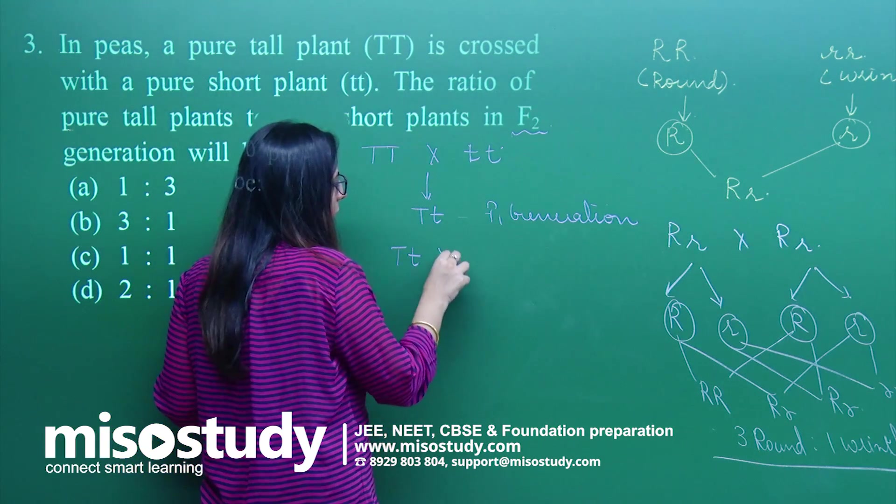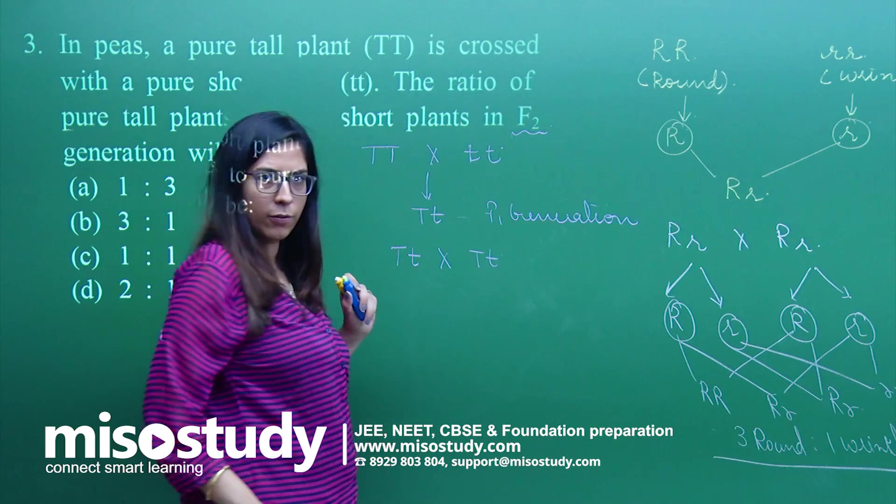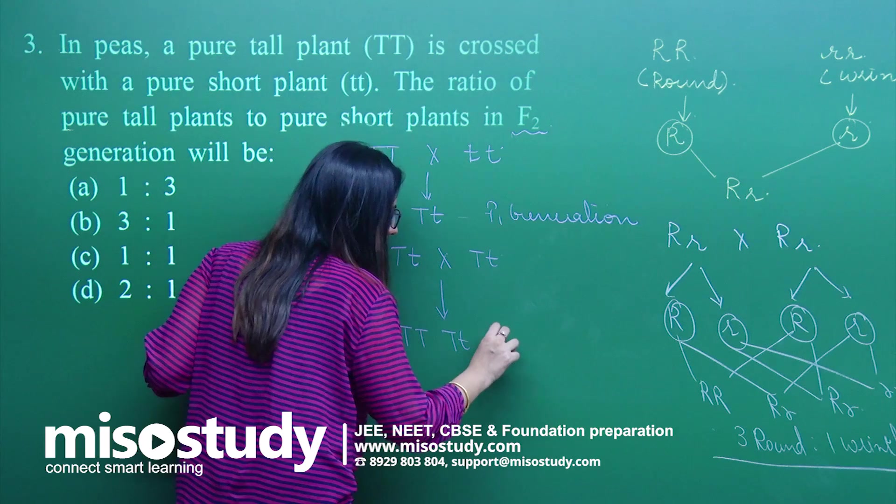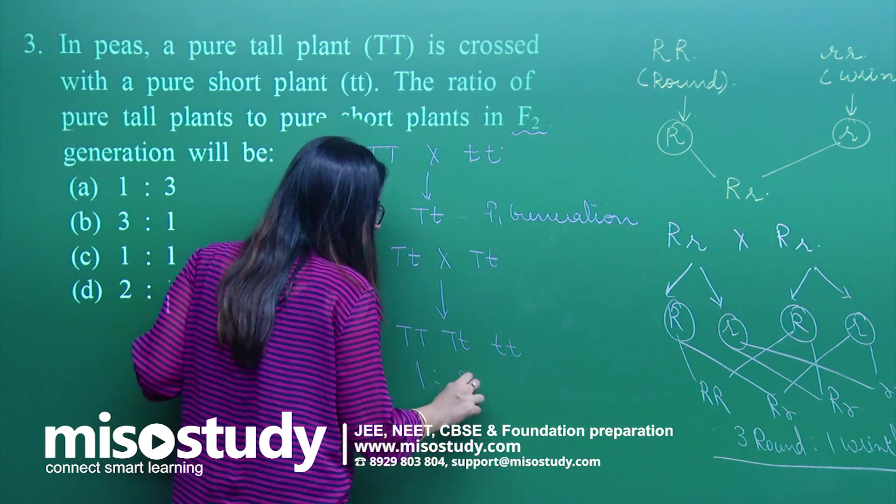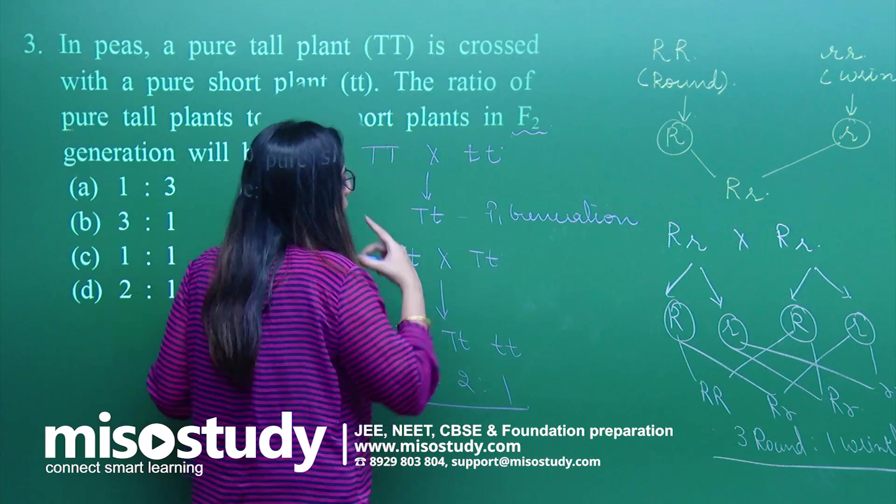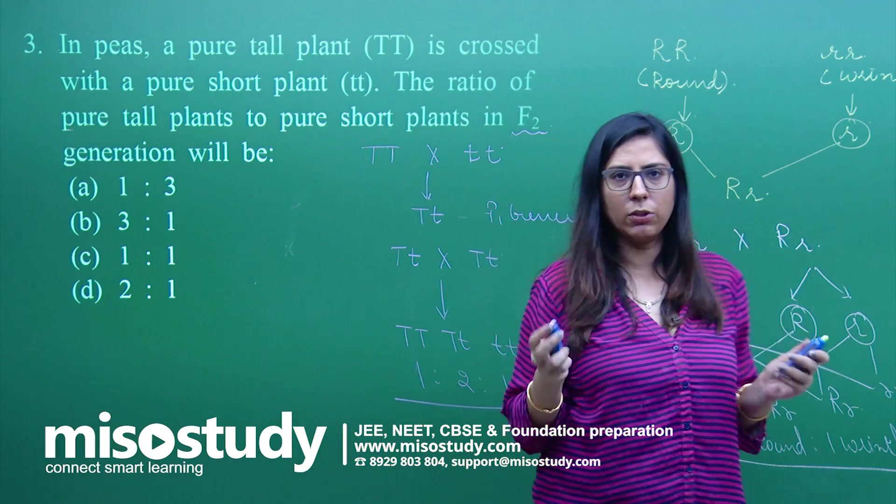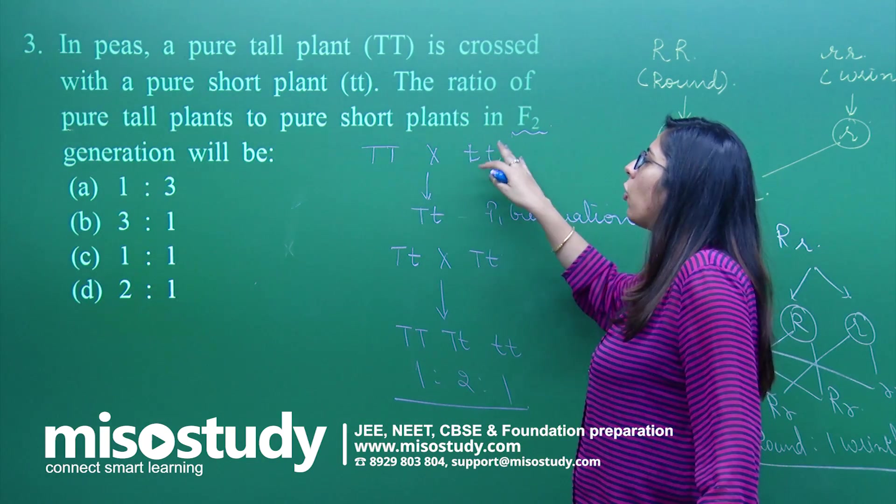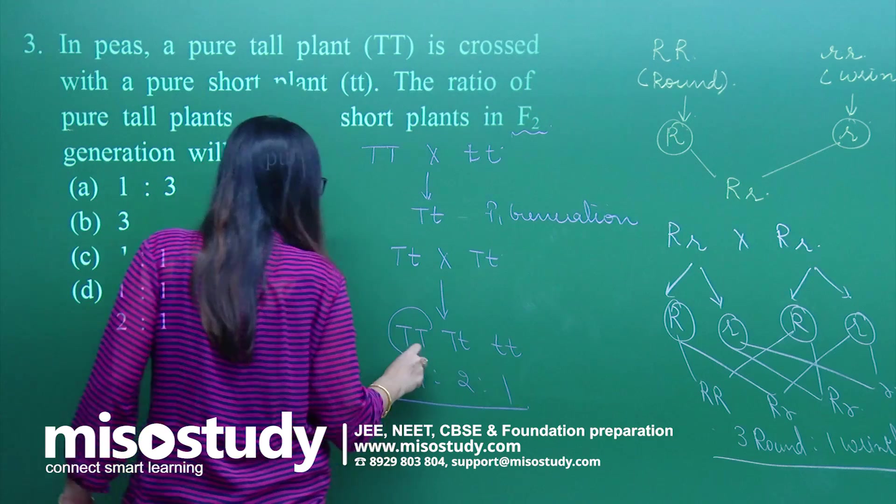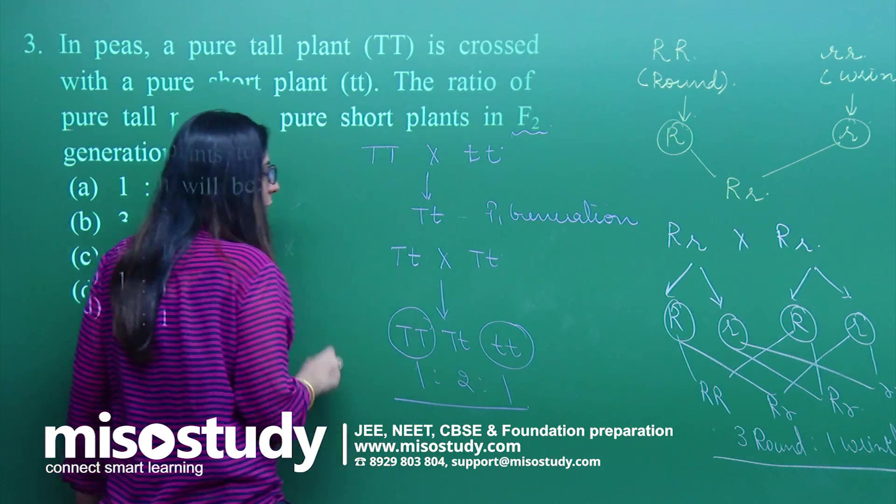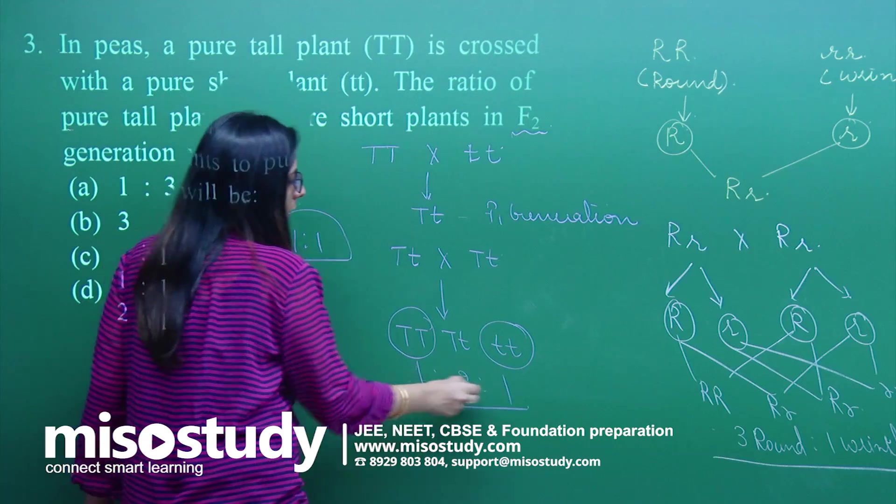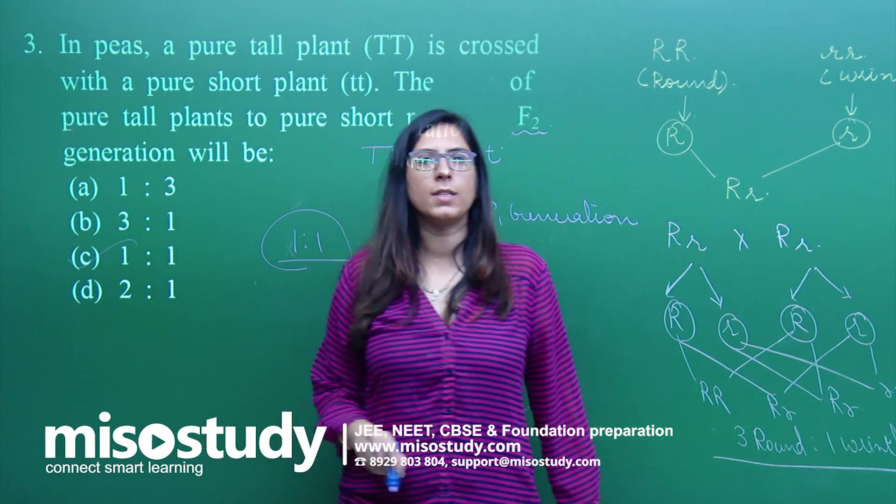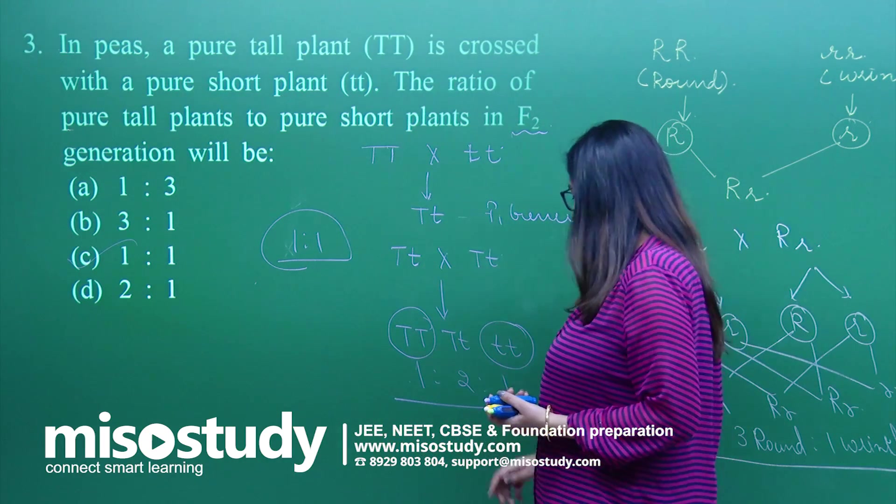We will go up to the F2 generation because here F2 is mentioned. Capital T small t crossed with capital T small t. The ratio comes out to be capital T capital T, capital T small t, small t capital T, and small t small t. The ratio is 1 is to 2 is to 1. We know about this monohybrid cross. Now question is asking the ratio of pure tall to pure short. These are the pure tall, these are the pure short. So what will be the ratio? Ratio is 1 is to 1. Option C is correct.